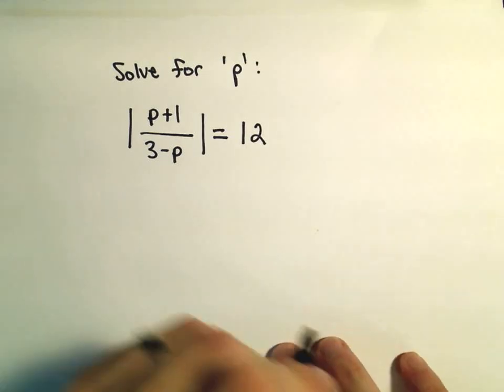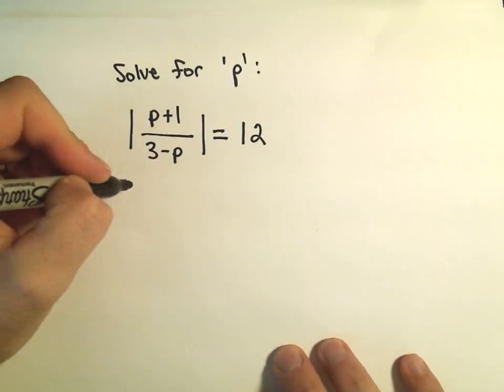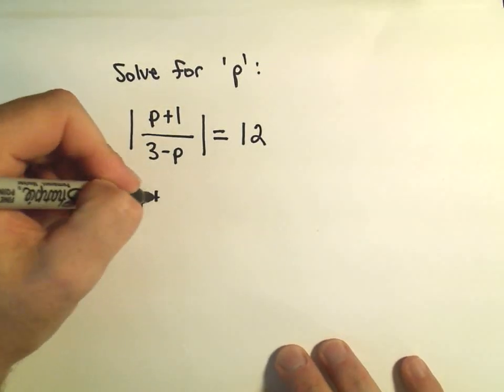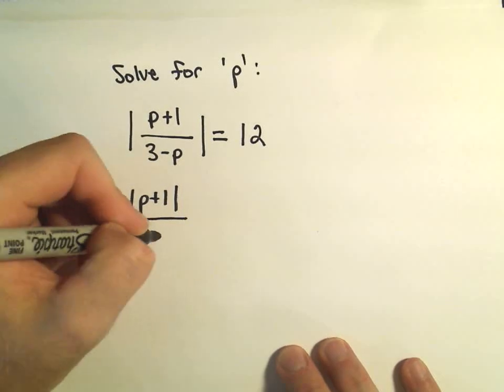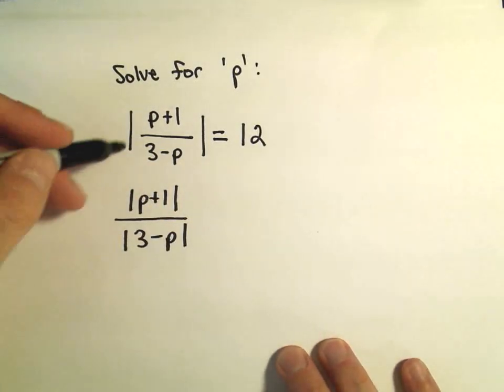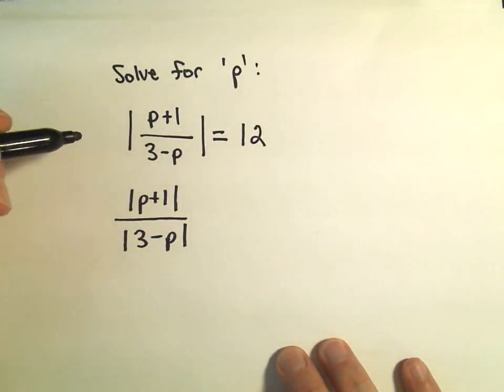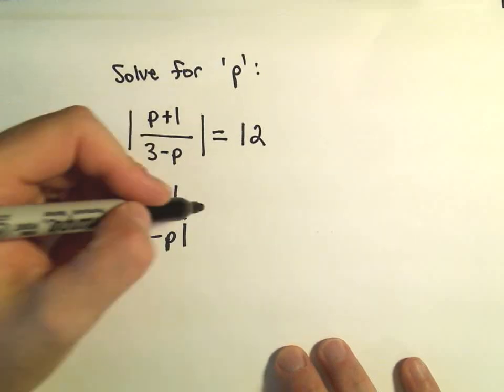Well, there's only one absolute value in there, but to get started, if you have the absolute value of a fraction, you can break this up as the absolute value of the numerator over the absolute value of the denominator. This is an equivalent algebraic way to break up absolute value of fractions.